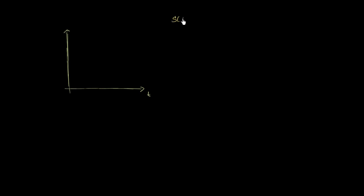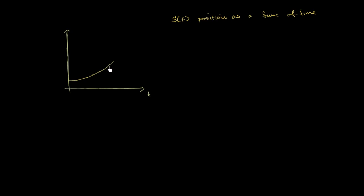Let's say that I have some function s of t, which is position as a function of time. Let me graph a potential s of t right over here. We have a horizontal axis as the time axis. I'll draw it kind of parabola-looking. If we call this a y-axis, we could even call this y equals s of t as a reasonable way to graph our position as a function of time.